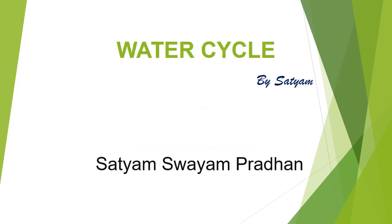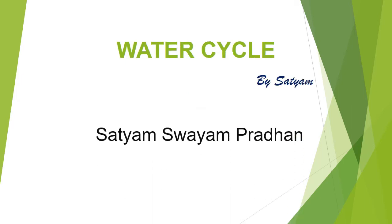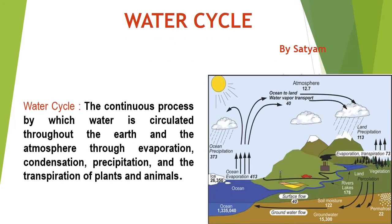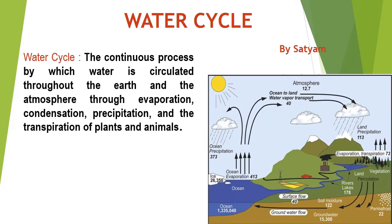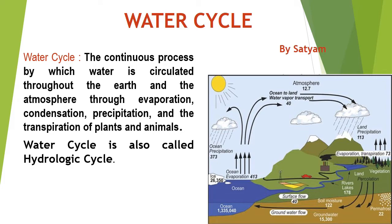Hello friends, my name is Satyam. Today we will discuss the water cycle — the continuous process by which water is circulated throughout the earth and the atmosphere through evaporation, condensation, precipitation, and the transpiration of plants and animals. The water cycle is also called the hydrologic cycle.